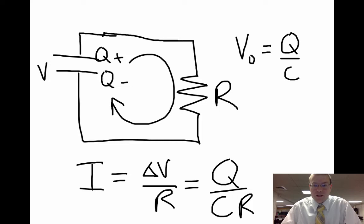So the initial current coming out of that capacitor and through that light bulb is Q over CR.